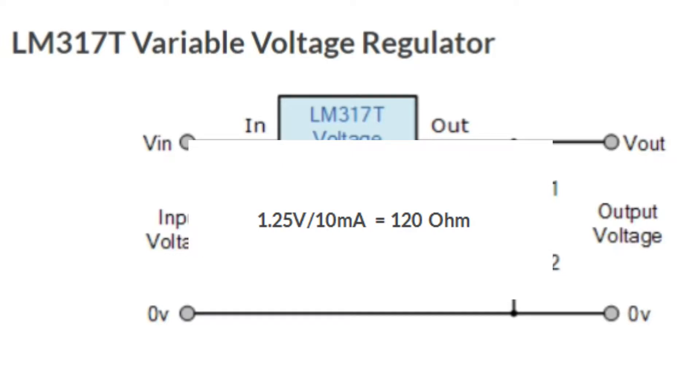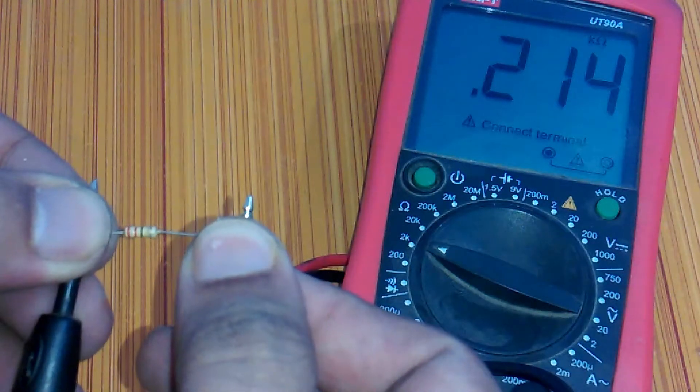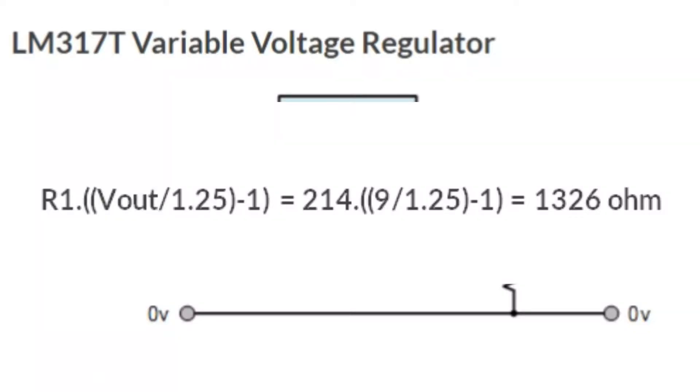This value can range anywhere from 120 ohms to 1000 ohms, with typical values of R1 being about 220 ohms to 240 ohms for good stability. In my case, I will be using 214 ohms.